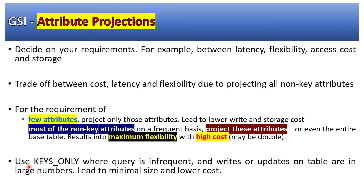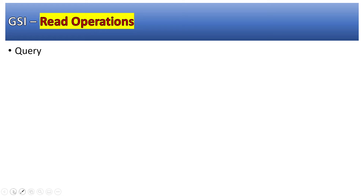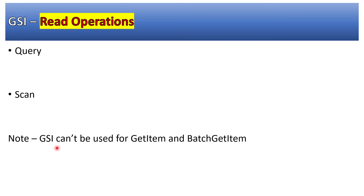Use keys-only projection where queries are infrequent — for example, when you just want to fetch a count or some attribute value. This leads to lower cost as well as lower storage cost. On a GSI you can perform either a Query or a Scan. Please note that the two operations GetItem and BatchGetItem cannot be used on a GSI.